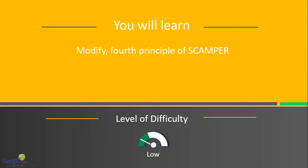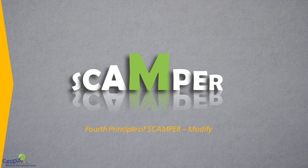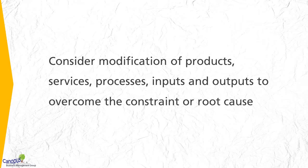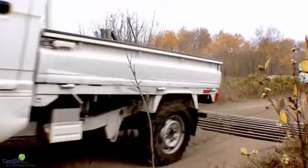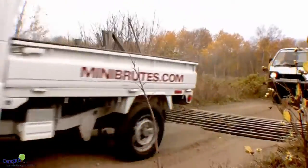The letter M in SCAMPER stands for Modify, Magnify, or Minimize. In this principle, we consider modification of products, services, processes, inputs, and outputs to overcome constraints or the root cause.